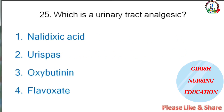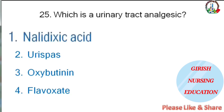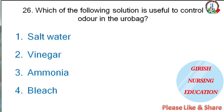Which is a urinary tract analgesic — nalidixic acid, urispas, oxybutynin, or flavoxate? The correct answer is nalidixic acid. Which solution is useful to control odor in a urostomy bag — salt water, vinegar, ammonia, or bleach? The correct answer is vinegar.